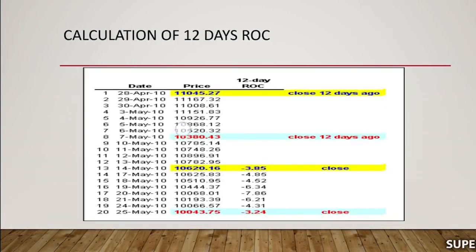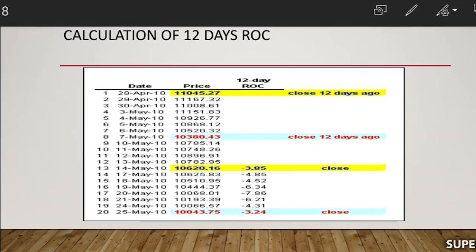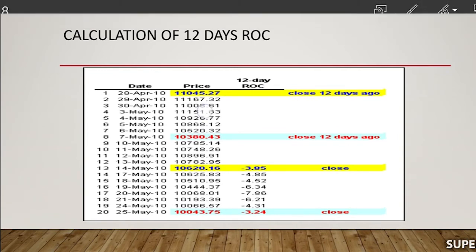Let's look at how to calculate a 12-day rate of change. In the table, the date is expressed in one column and the price in another. Price here refers to both the current closing price and the old closing price from this column.